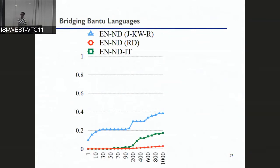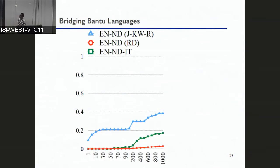Question from audience: Do the abbreviations Nd and Rd stand for languages, and don't you need an Nd-to-Rd dictionary to bridge? The speaker clarifies: those are language abbreviations. Going from EN to ND via Rd would require an Rd-to-ND dictionary to triangulate. The answer is that there are some words that are shared across these Bantu languages, so those shared words are used. It does help a little bit, and there seems to be something useful there specifically for these very low-resource Bantu languages.